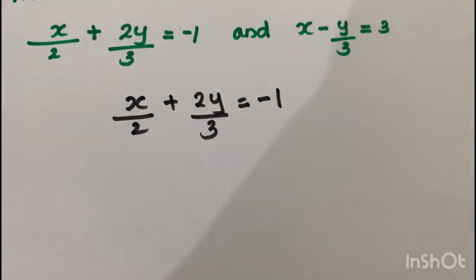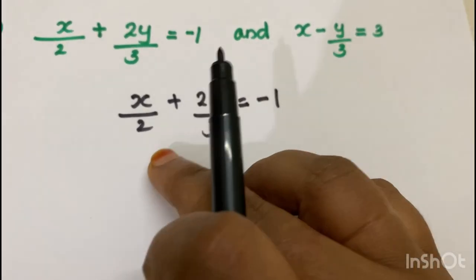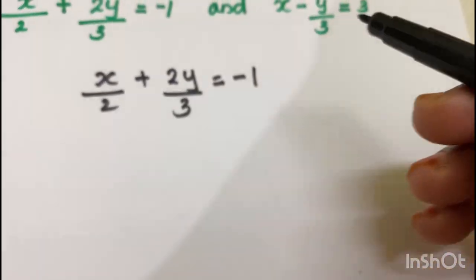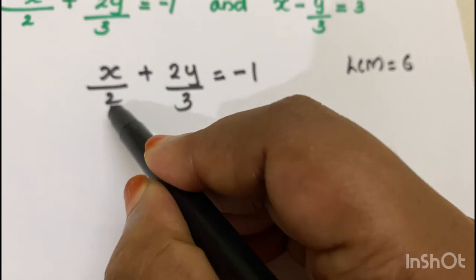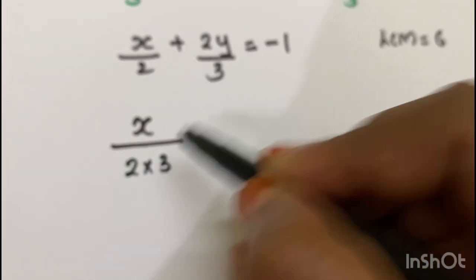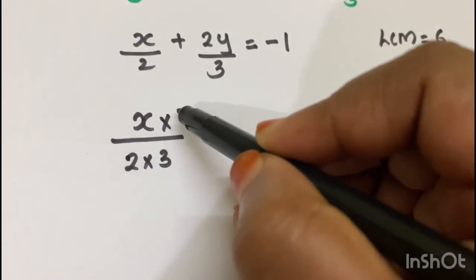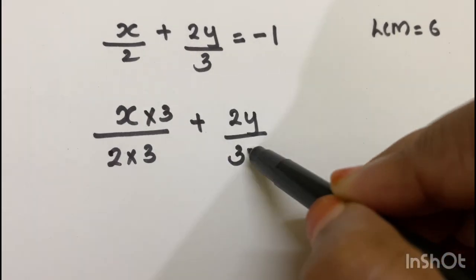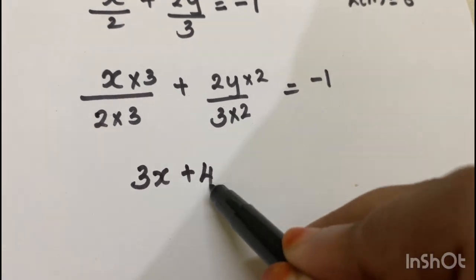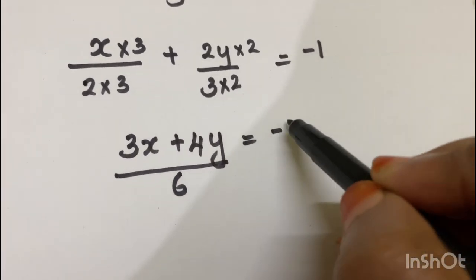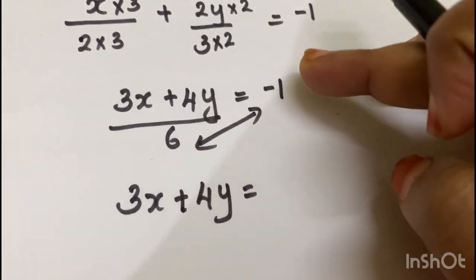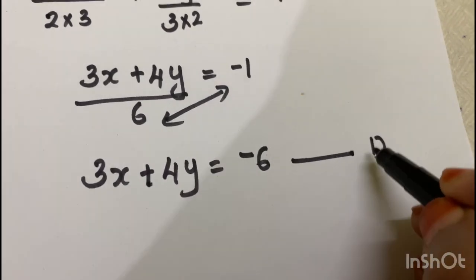This is the first equation. We will cross multiply. x into 3 is 3x, plus 2 into 2 is 4y, then the denominator 3 gives us 6, equal to minus 1. So 3x plus 4y is equal to 6 times minus 1, which is equal to minus 6. Now we have the first equation: 3x plus 4y equals minus 6.